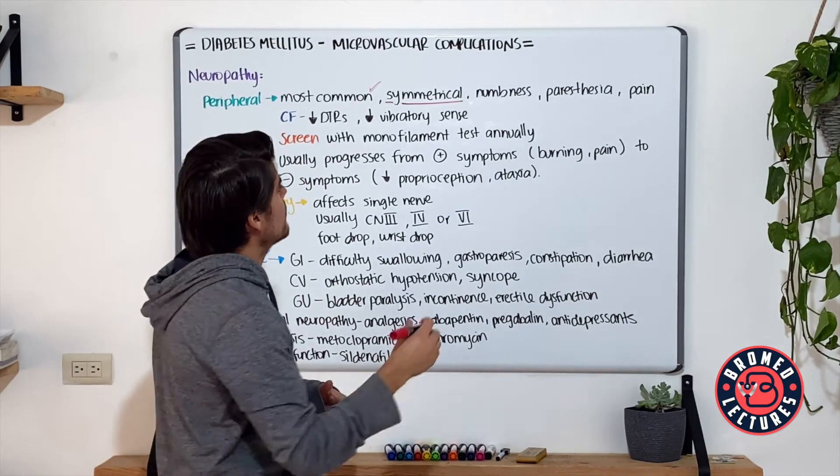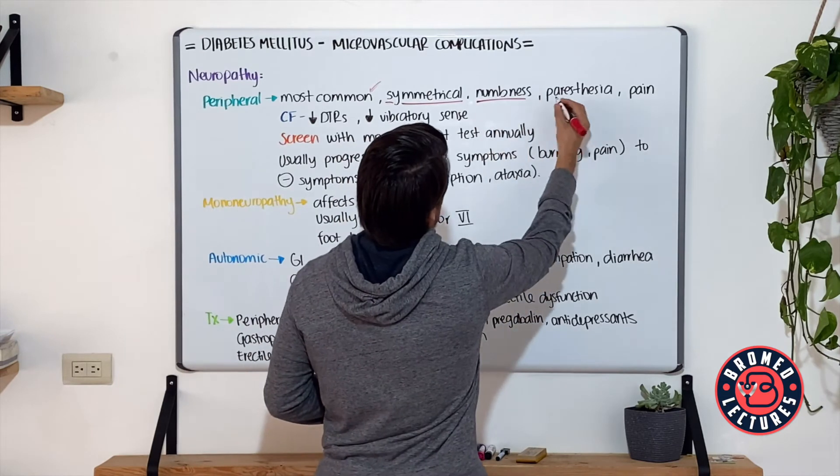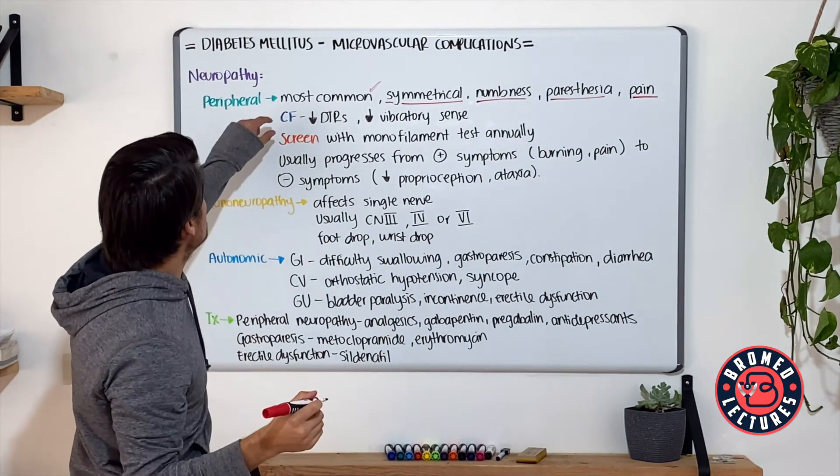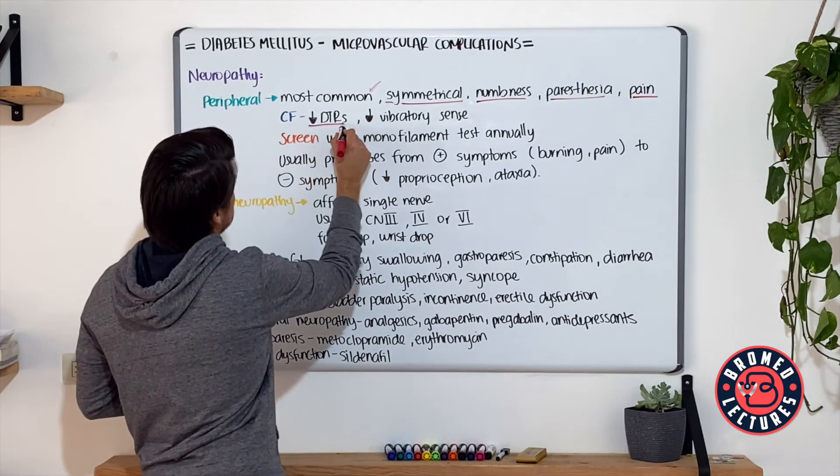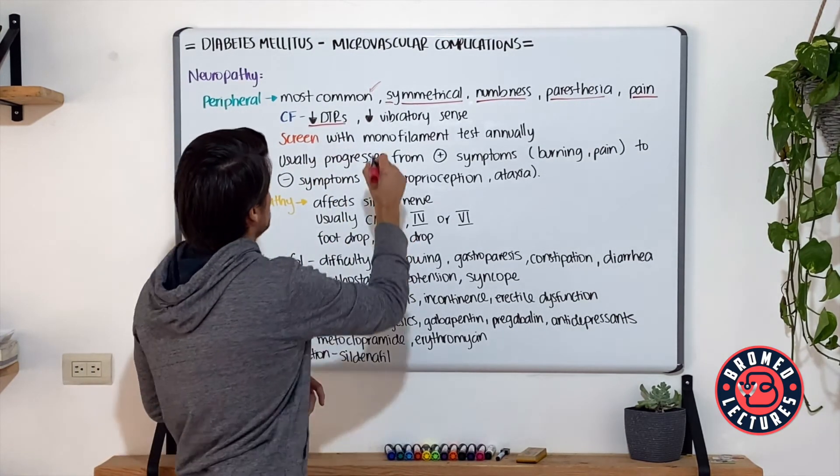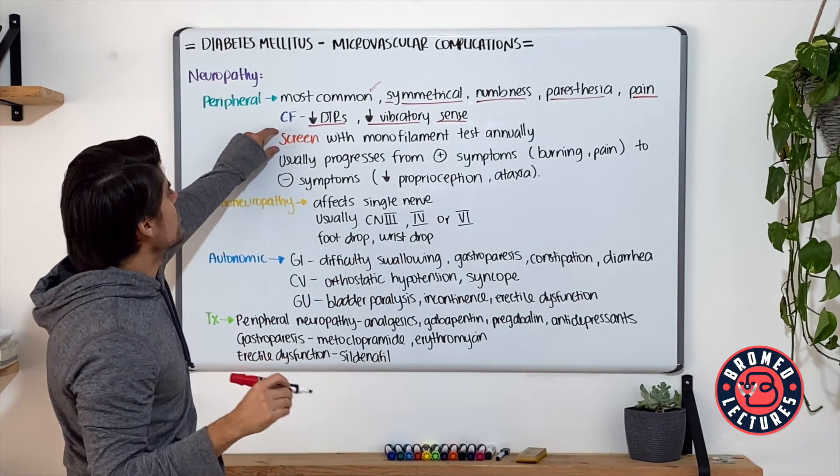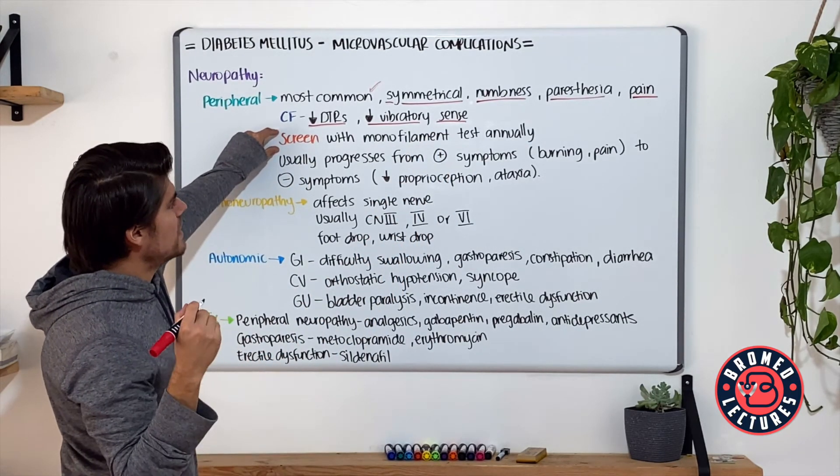They usually refer numbness, paresthesias, and pain. On clinical findings, you're going to see decreased deep tendon reflexes, decreased vibratory sense. You screen this condition with a monofilament test performed annually.